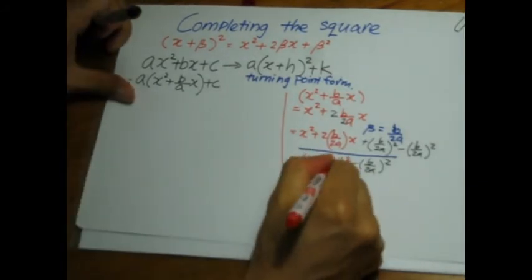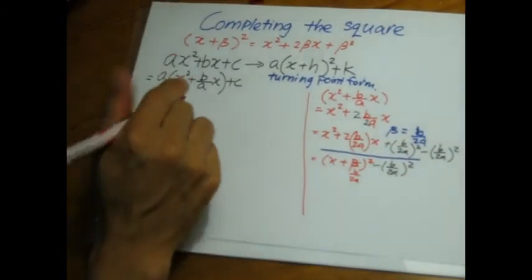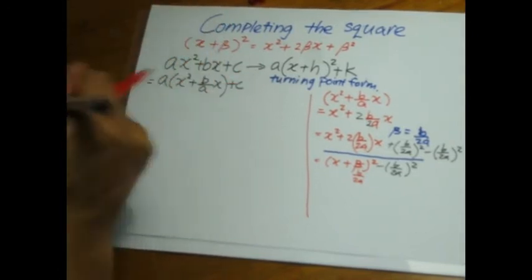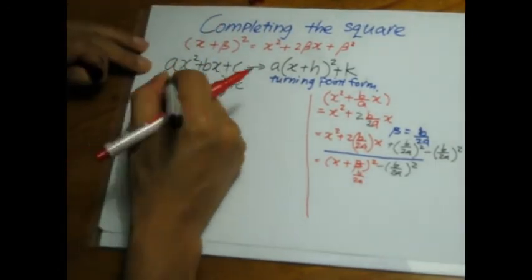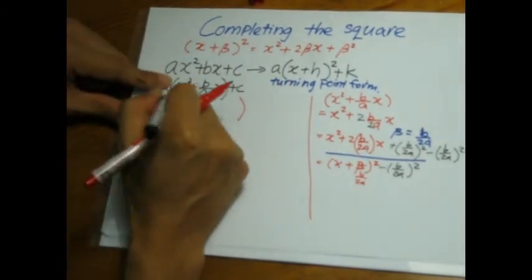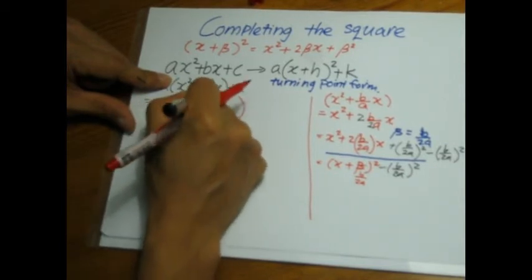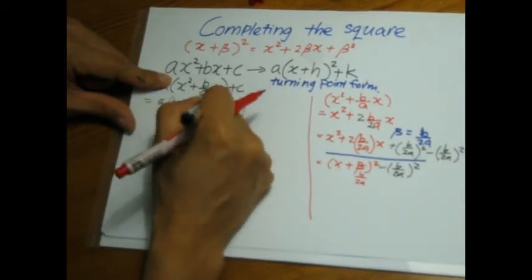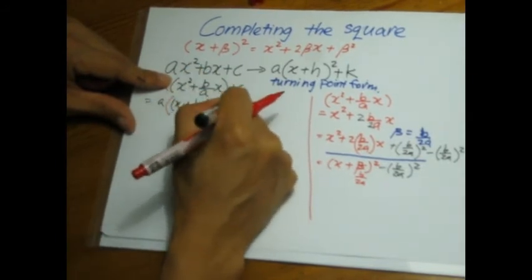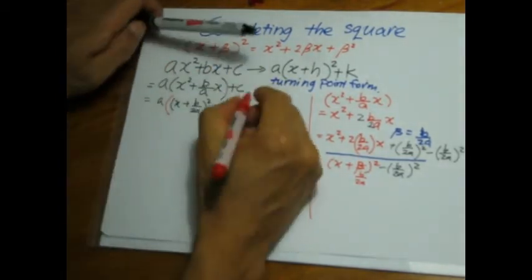So I can now replace the bracket now. That is a bracket, huge bracket, and then inside here I'll write x plus b over 2a everything squared, minus bracket b over 2a everything squared, plus c.